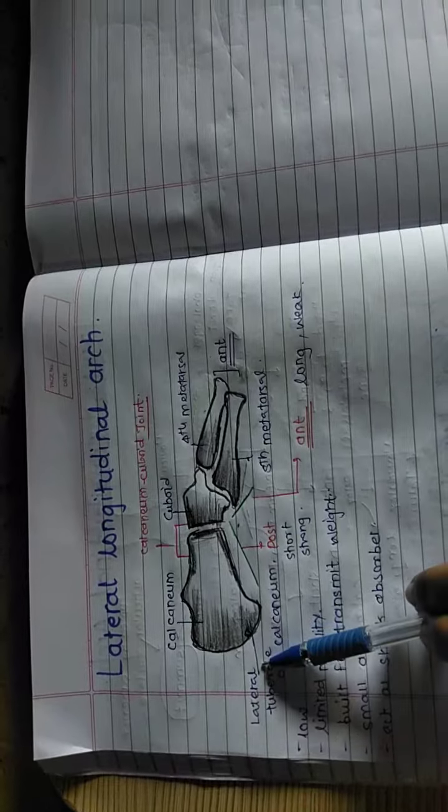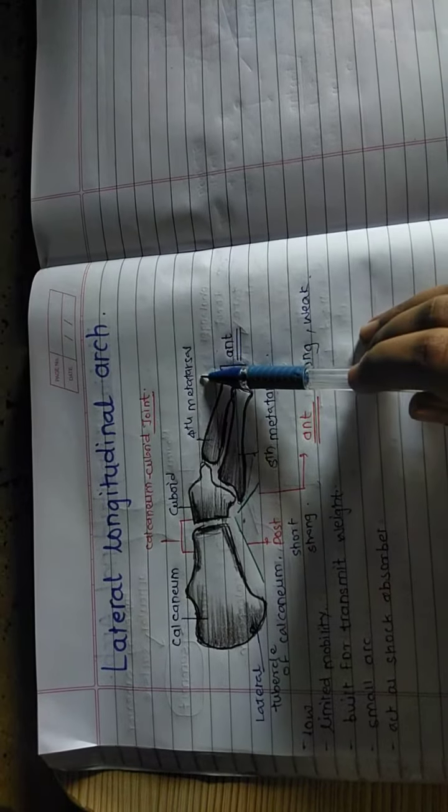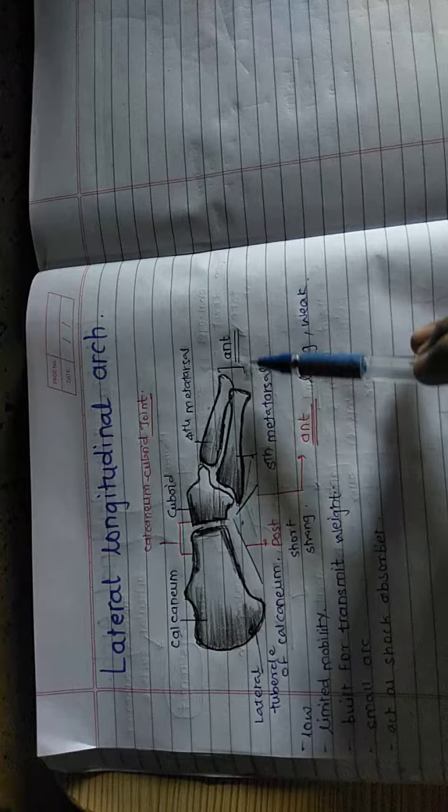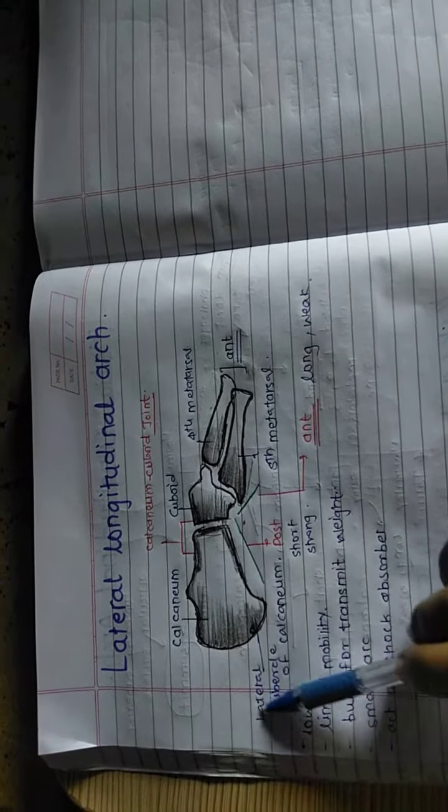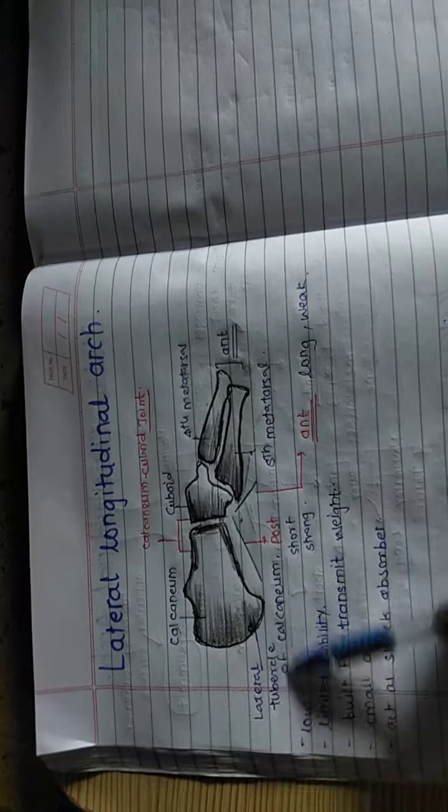There are the two ends, anterior end and the posterior end. Anterior end is formed by the fourth metatarsal and the fifth metatarsal bone. The posterior end is formed by the lateral tubercle of the calcaneum.